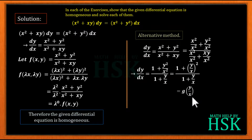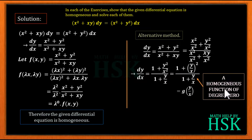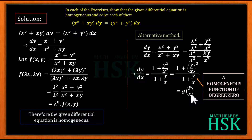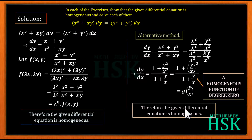Since dy/dx can be written as g(y/x), and y/x has a net degree of 0 in the variables (y has degree 1 and x has degree 1, giving a net degree of 1−1 = 0), this shows that g(y/x) is a homogeneous function of degree 0. Therefore the given differential equation is proved to be homogeneous.